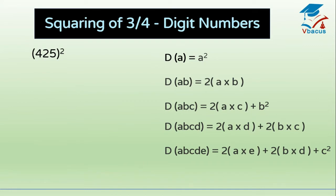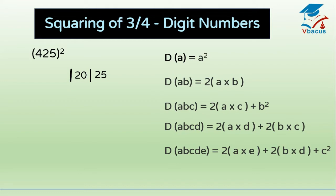Now let us take squaring of 3 and 4-digit numbers. Find the square of 425. Take the 1st digit — 5 fives are 25. Take 2 digits (tens and units): 5 twos are 10, double of 10 is 20. Insert slash. Then take 3 digits together — first and last: 4 fives are 20, double of 20 is 40, and square of 2 is 4 — it becomes 44. Forget 5 and multiply 4 and 2: 4 twos are 8, double of 8 is 16. Now square of the last remaining digit 4: 4 fours are 16.